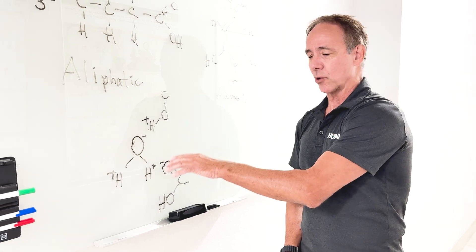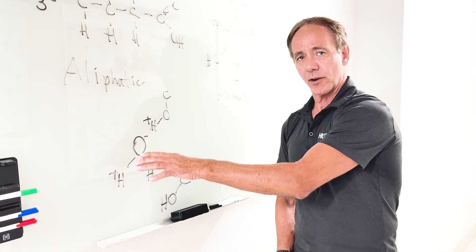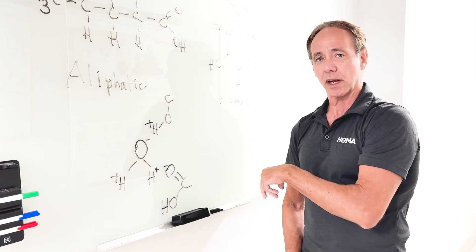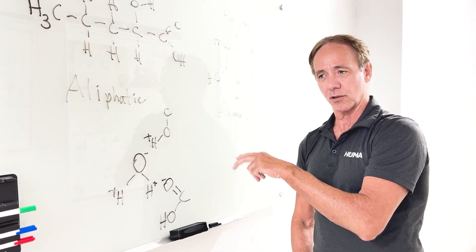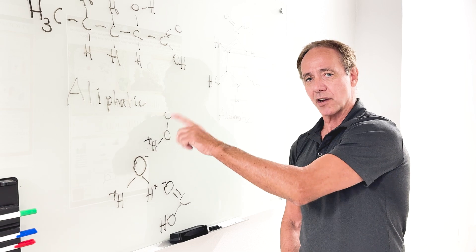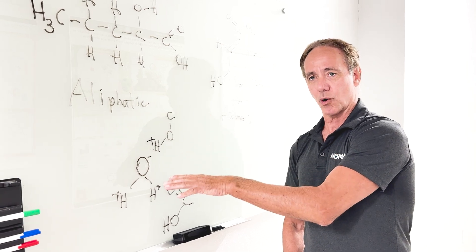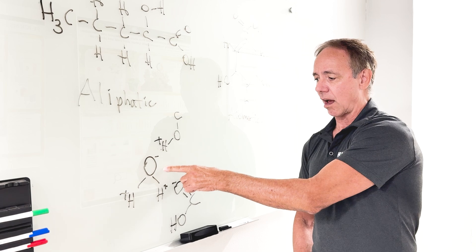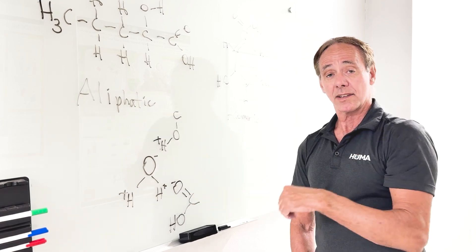And so fulvic molecules have a lot of these functional groups. They're able to bond, hydrogen bond with water and stay in solution. Whereas humic molecules that are included in the humic fraction don't have enough of these oxygen-containing functional groups to bind with the oxygen or hydrogen of water to stay in solution.